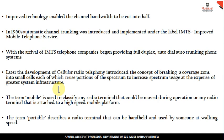The term 'mobile' is used to classify any radio terminal that can be moved during its operation. The term 'portable' describes a radio terminal that can be handheld or mounted somewhere. These are the key definitions distinguishing mobile from portable devices.